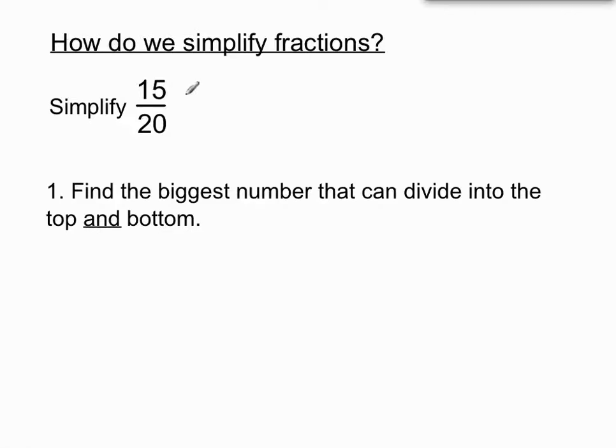We need to know our tables for this one. We need to know what might divide into 15 and into 20. And once we find that number, that number that does divide into 15 and 20 is known as the highest common factor or HCF in short.